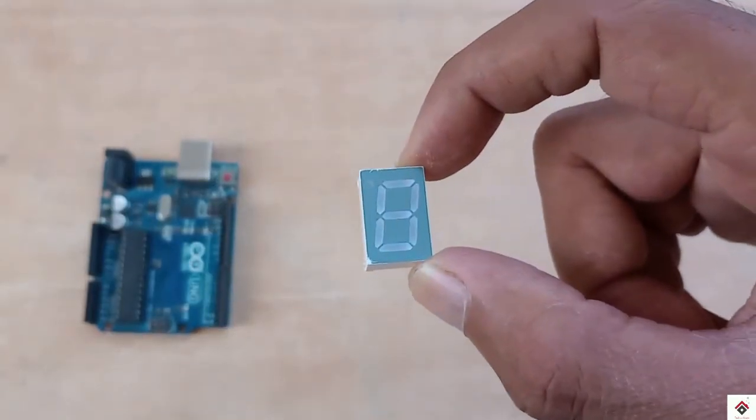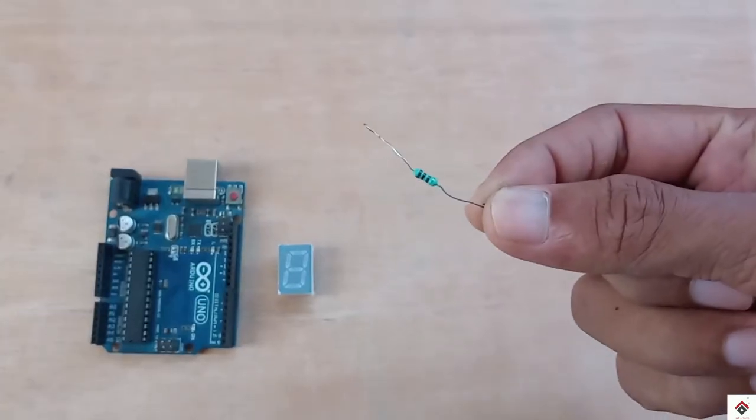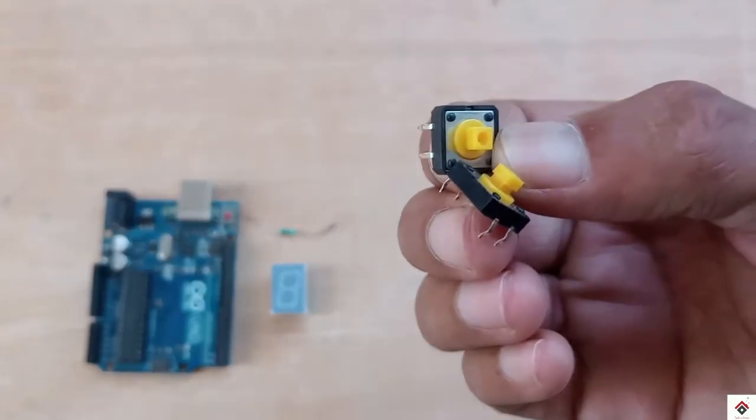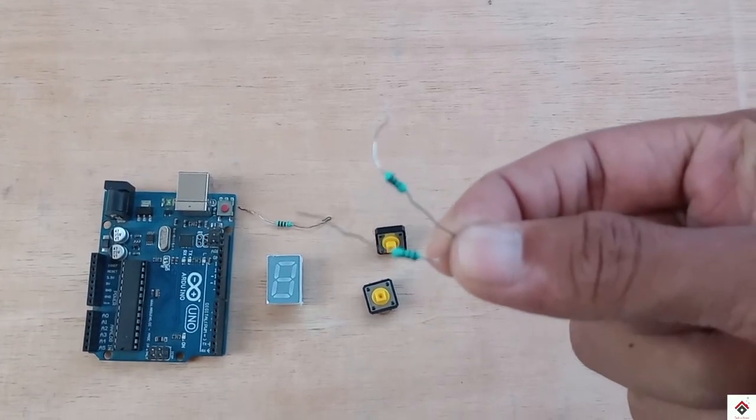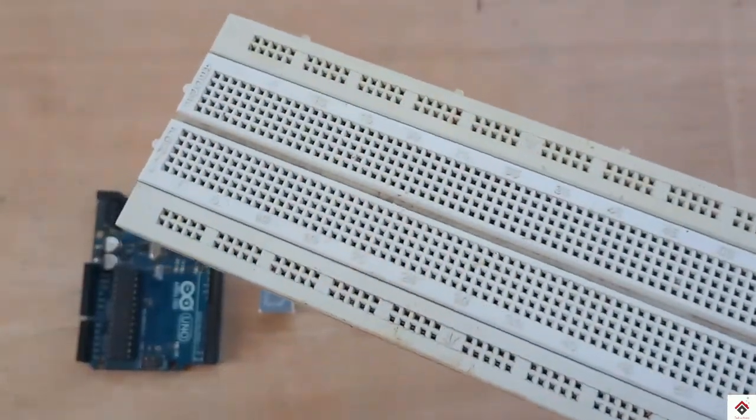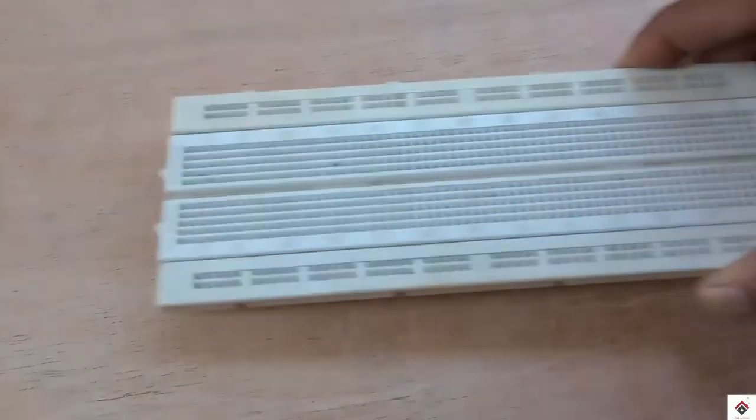Coming to the connections, as I showed in my previous video, I'm connecting the segment pins to Arduino digital pins starting from pin 2 till 8, and connecting the common pin to the ground with a 330-ohm resistor.